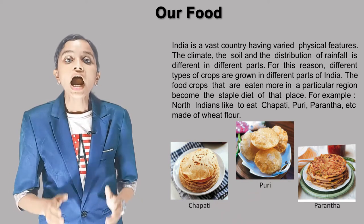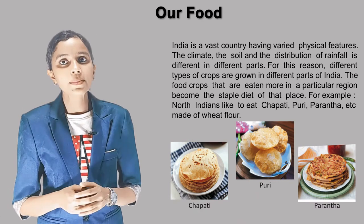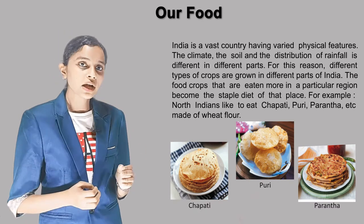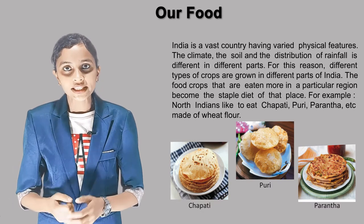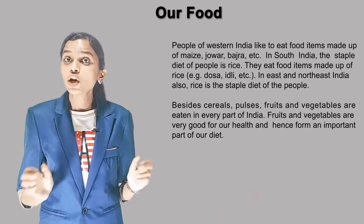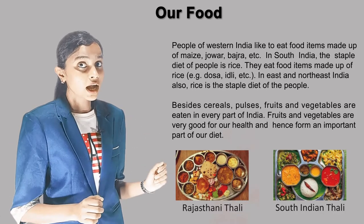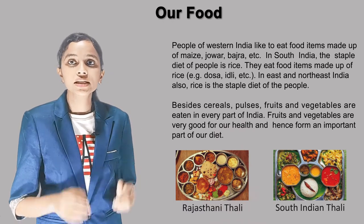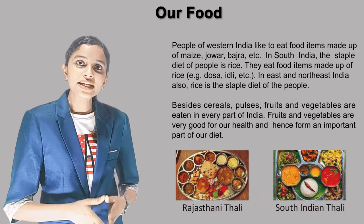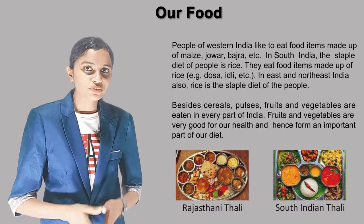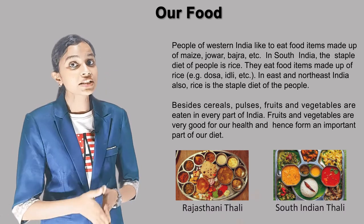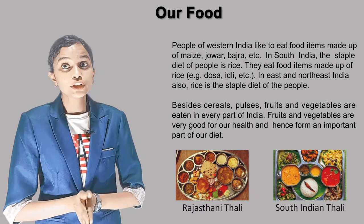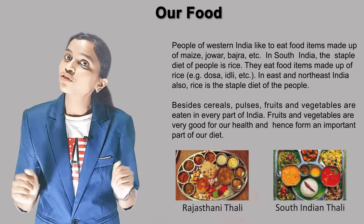In North India, people also like to eat a lot of things made of maize, jowar, bajra, etc. In South India, the staple diet of people is rice — they eat food items made of rice, for example dosa, idli, etc.